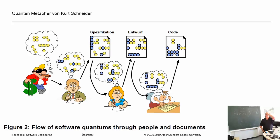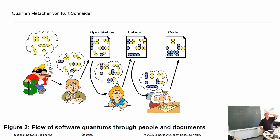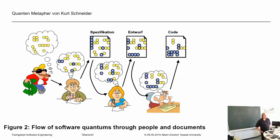Nina ist gerade rausgegangen — die könnte es nochmal bestätigen. Die Leute bei Micromata machen das so, soweit ich das weiß. Bei Plenty Market — das ist ein großer Softwarehersteller aus Kassel. Die machen Marketplaces für Amazon im Wesentlichen, insbesondere Online-Shops und die Anbindung der Lagerlogistik und des Versendens der Artikel.